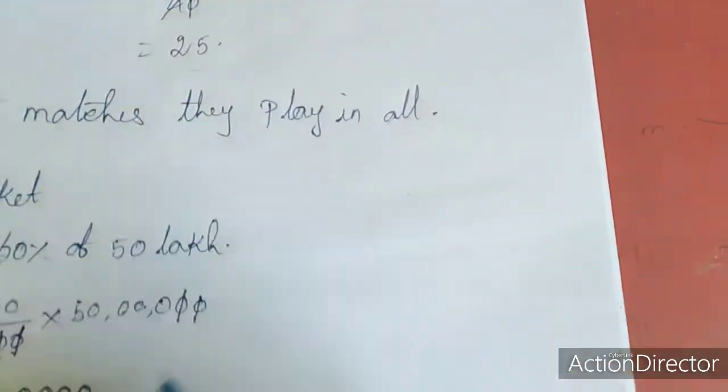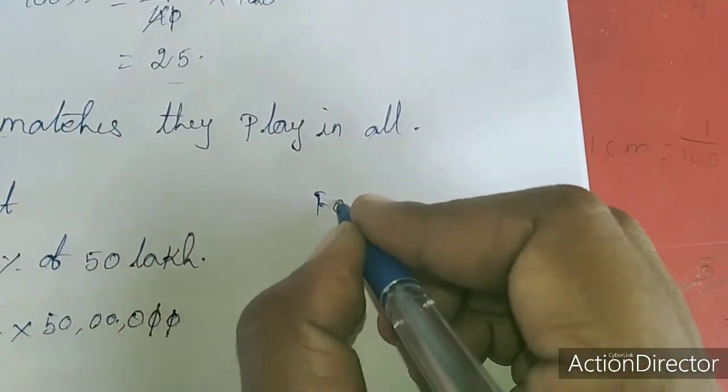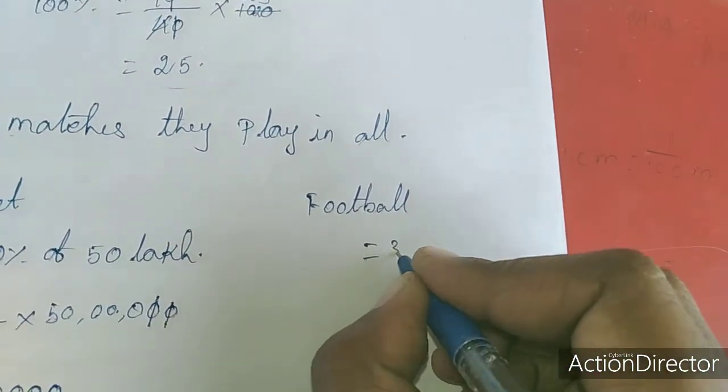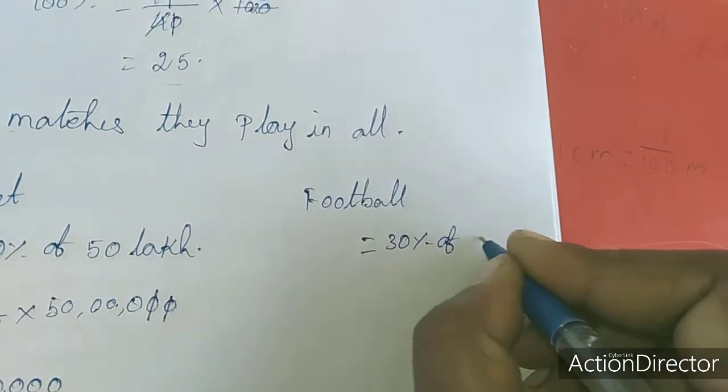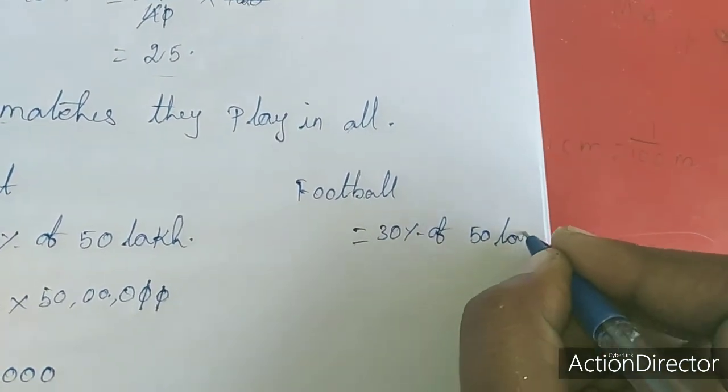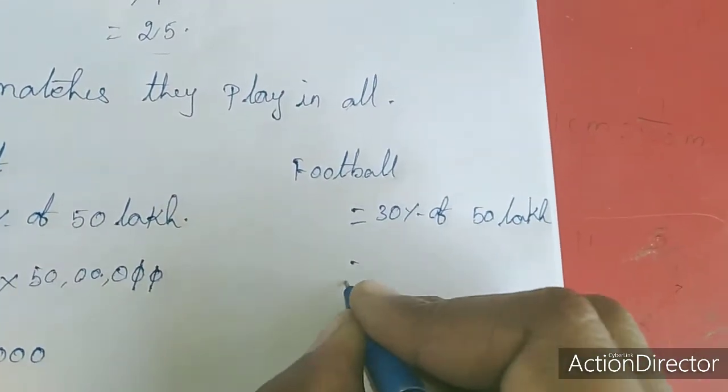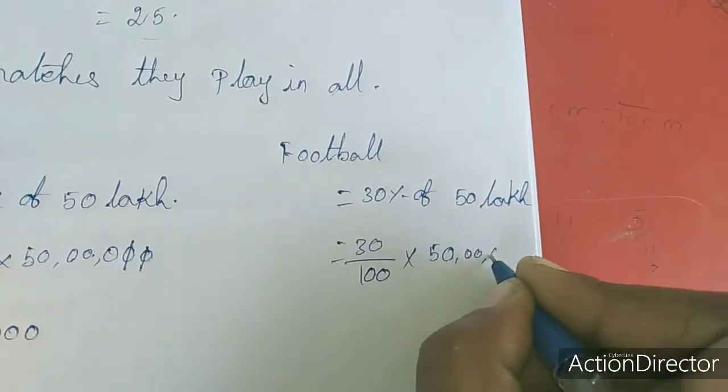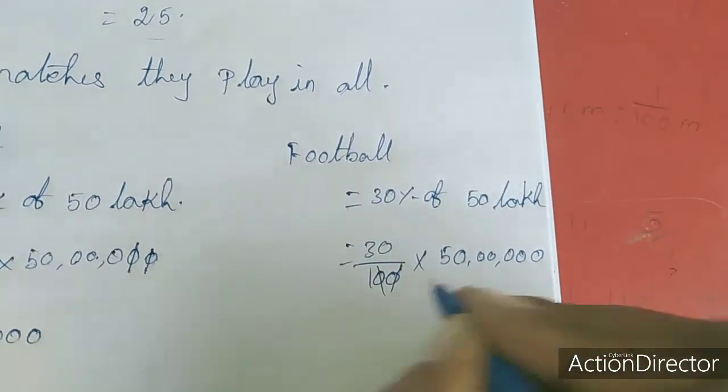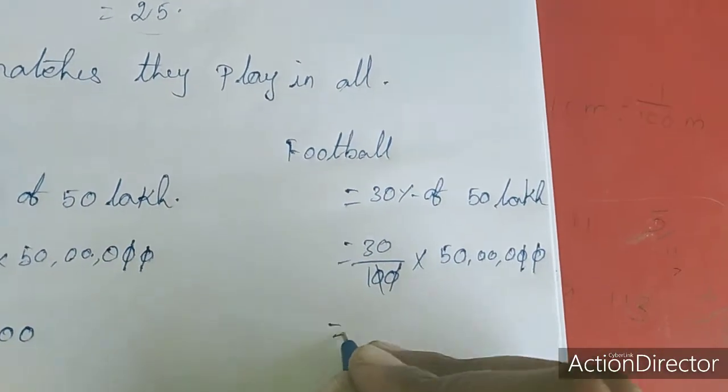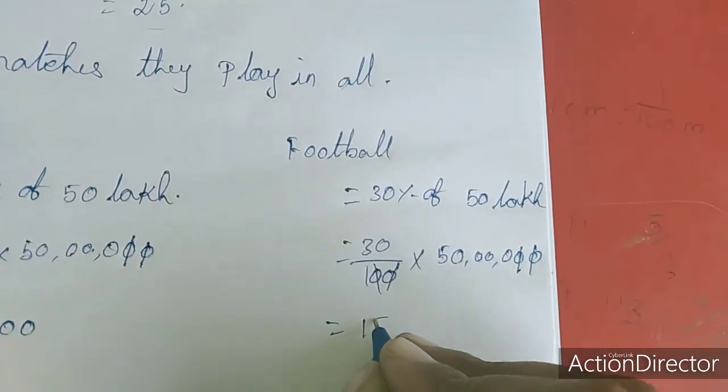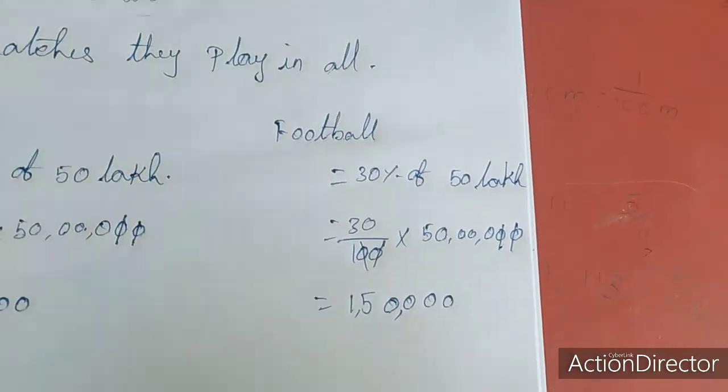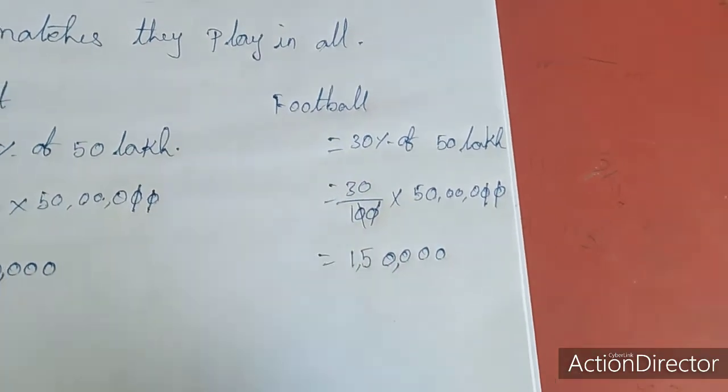Next game is football. Football is 30%, so 30% of 50 lakh. 30 by 100 into 50 lakh. 00, 00, 3, 5, 7, 15, 3, 4, 0, 1, 2, 3, 4, 0. So 1 lakh 50,000. And next, the other games.